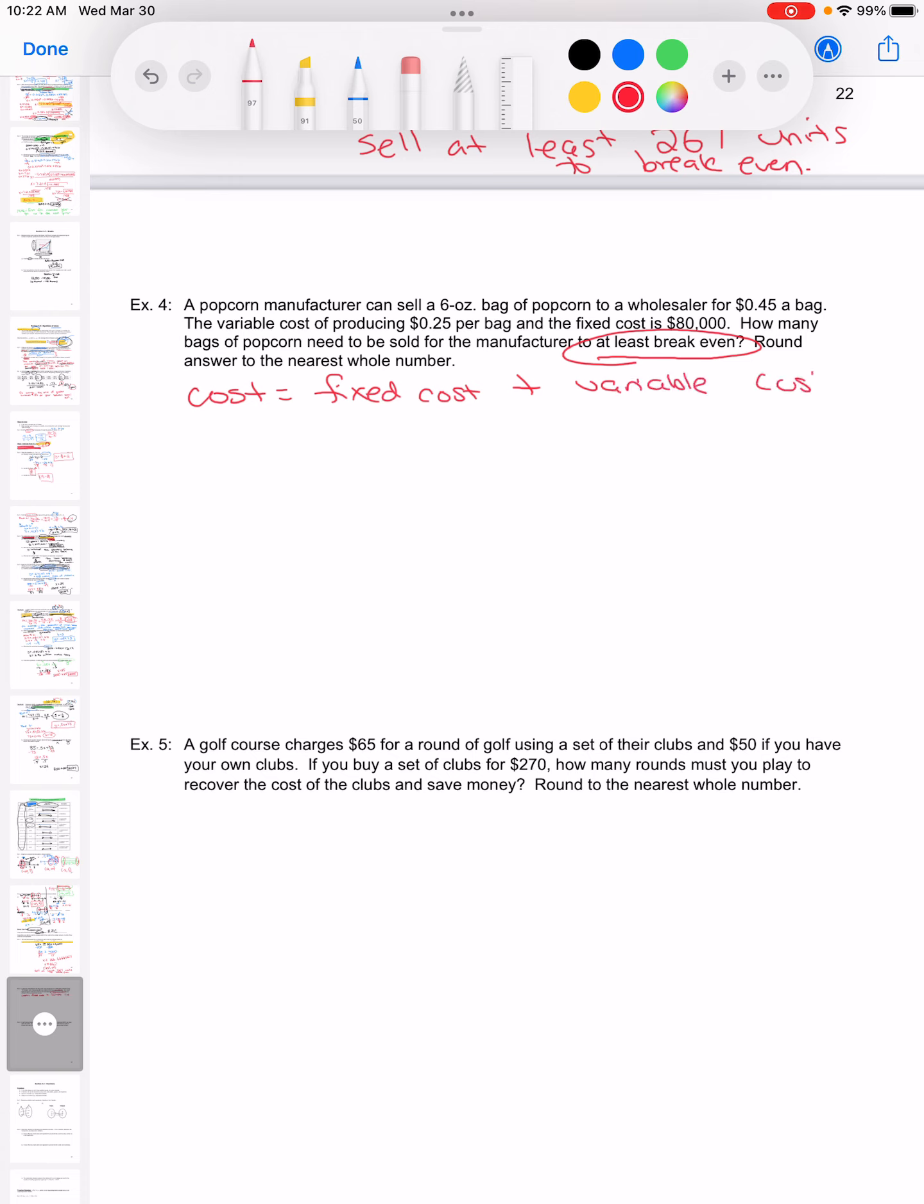Plus the variable cost, and I've given you those, but we have to write this equation. We also are going to have to write the revenue as well. A popcorn manufacturer can sell its bag of popcorn to a wholesaler for 45 cents a bag. So that's what I'm selling it at, that's my revenue. I'll try to color code it. My revenue is going to be 0.45 a bag, I'm going to call it x. Remember, it's going to be the cost times the items that I'm selling, so I'm selling bags of popcorn, that's my revenue.